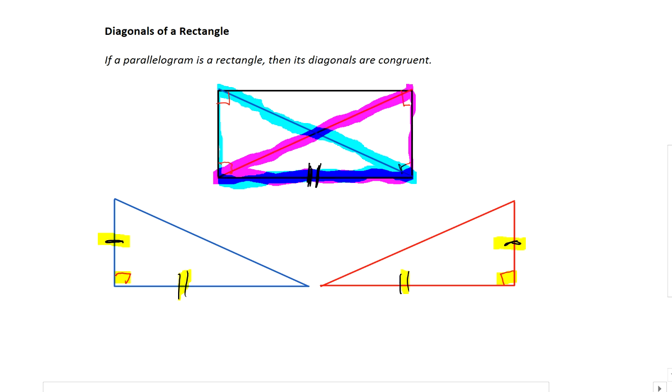And if we look back at the congruent postulates, we have here a side, an angle, and a side. And the angle is included between the two sides, meaning that we have SAS. So once we prove that they're congruent because of SAS,